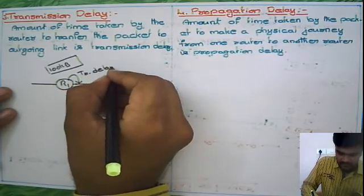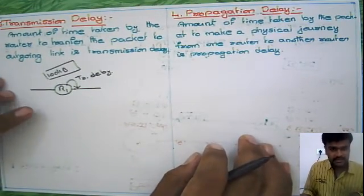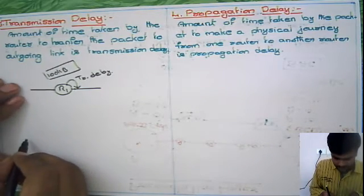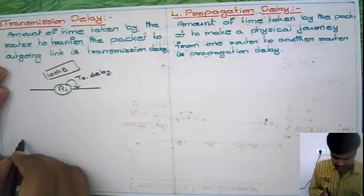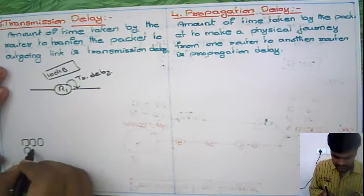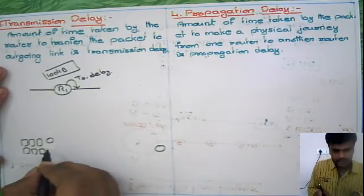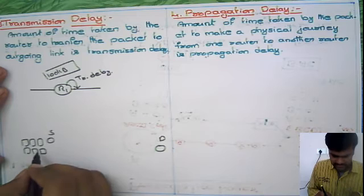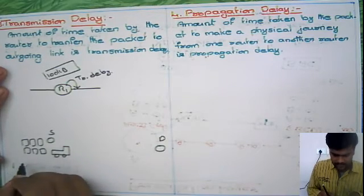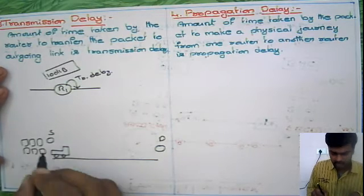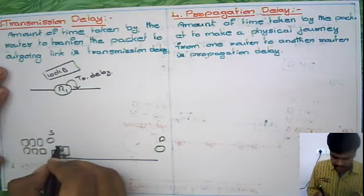That will obviously take a certain amount of time. To understand this, let's take one general example. Suppose you are vacating the house. While vacating the house, you made parcels of all your goods. These are all your goods, and you are going to a certain place. You have to reach from this source to destination. These things are ready, so you have to load them into the vehicle. This is the medium which will travel from here to here. So all these goods you have to load into this vehicle. You are keeping all these goods one by one.